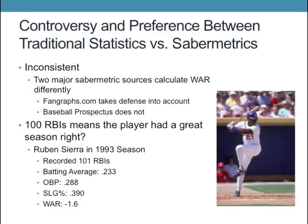Another example of the downsides of using strictly traditional statistics is Ruben Sierra's 1993 season. Sierra recorded 101 RBIs, which in most cases indicates a very productive and quality season. However, looking deeper into his stats, he had only hit .233, his OBP was only .288, and his WAR was a dismal negative 1.6. Sierra had a rather disappointing season despite 101 RBIs, probably because he hit primarily in the middle of the order, which gave him more opportunities to accumulate RBIs. This is a major flaw in the assumptions underlying traditional statistics.